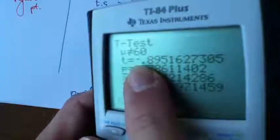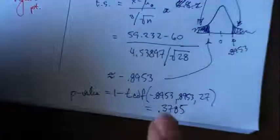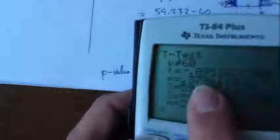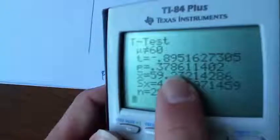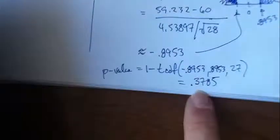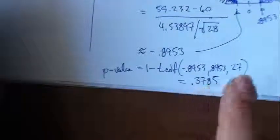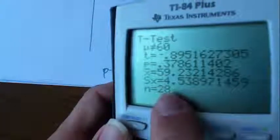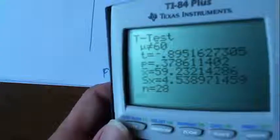It's a t-test where the alternative is that the mu is not equal to 60. Our test statistic value is negative 0.895 something or other, which is approximately what we got. The p-value is 0.3786 or so, okay? Pretty close, probably because I rounded something, okay? Here's our sample mean. Standard deviation reminds us that we took a sample of size 28, okay?